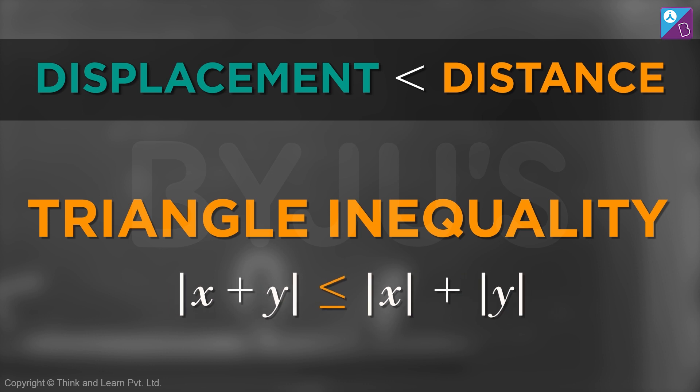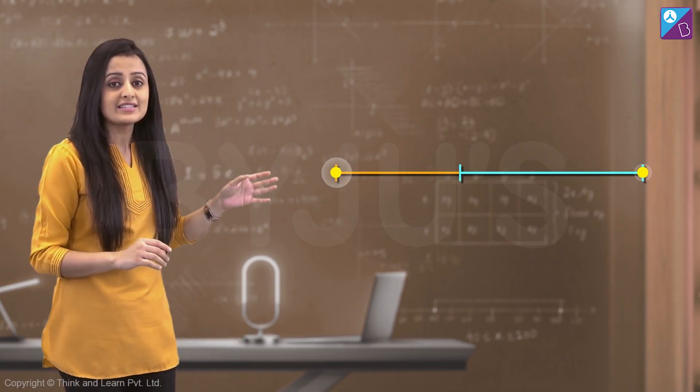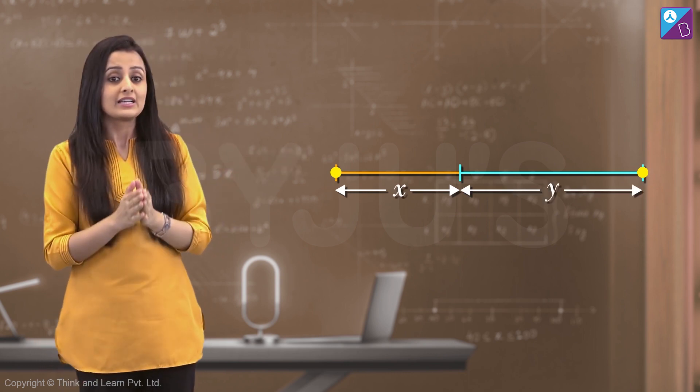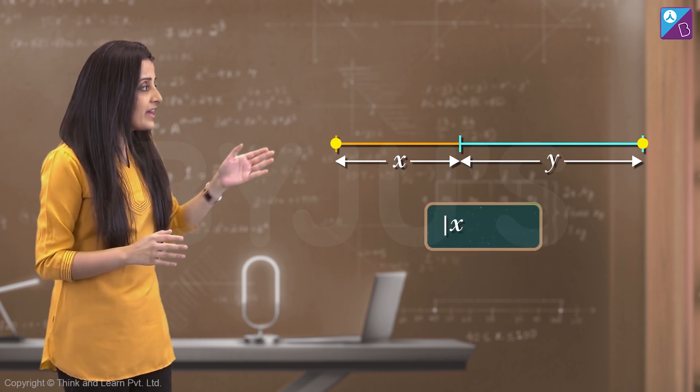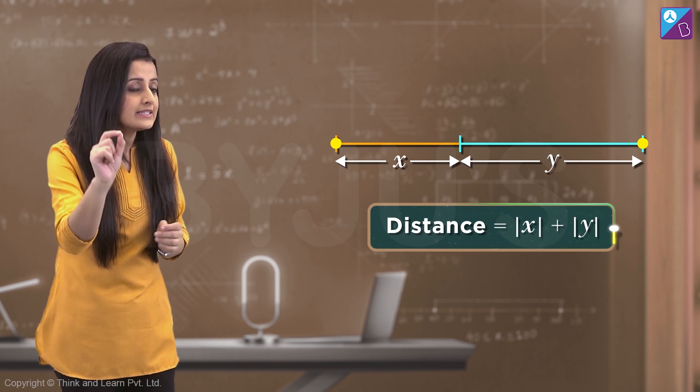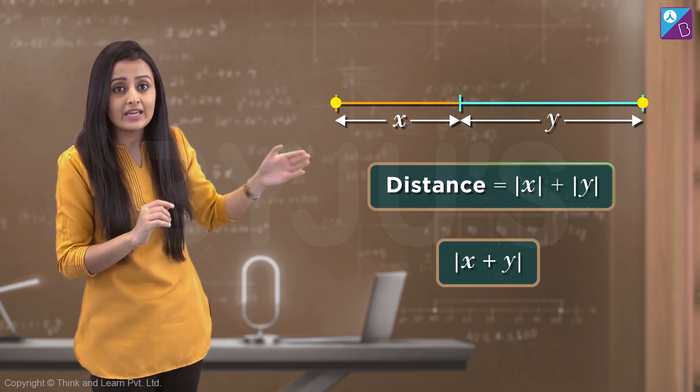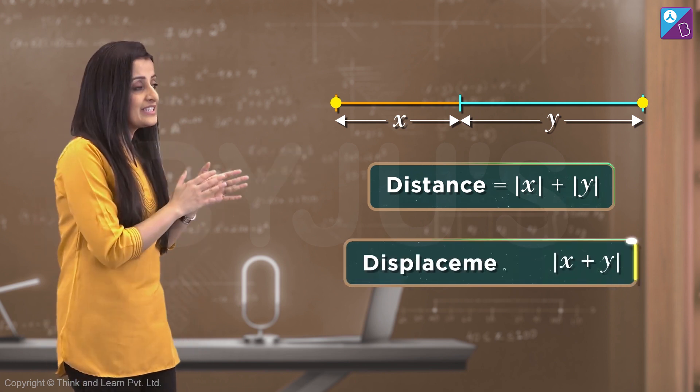Didn't realize? Well, if we consider x and y as the direction-specific movement, displacement, then mod of x plus mod of y will give us the total distance covered. But when we take the mod of x plus y, this represents displacement.